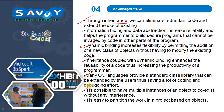It is possible to have multiple instances of an object to coexist without any interference. It is easy to partition the work in a project based on objects. Using Object Oriented Programming, everything should be divided into an object and we can communicate with the objects very easily.